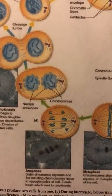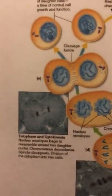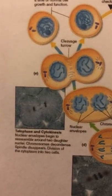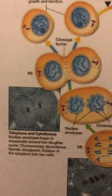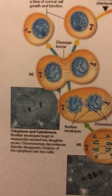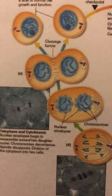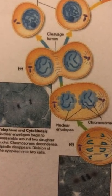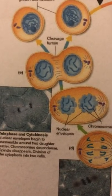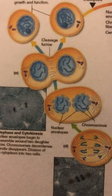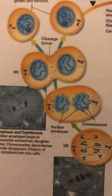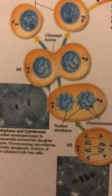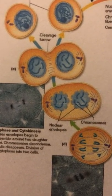In the last stage of mitosis, telophase, nuclear envelopes form around the two sets of chromosomes and the nucleoli can be seen inside the nuclei.